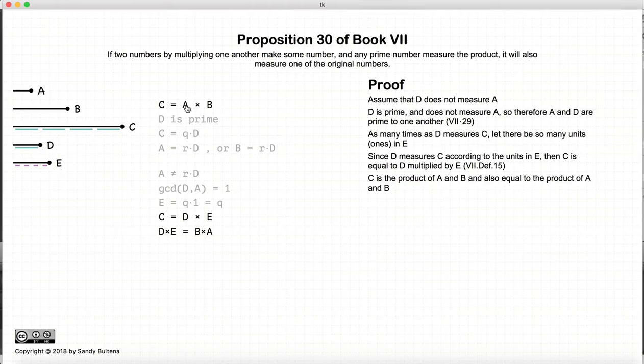Now if C is equal to D times E, it's also equal to A times B, so D times E equals B times A, which means that the ratio of D to A will be equal to the ratio of B to E. That's from Proposition 19 of this book.